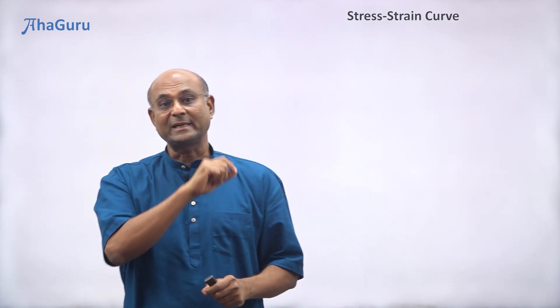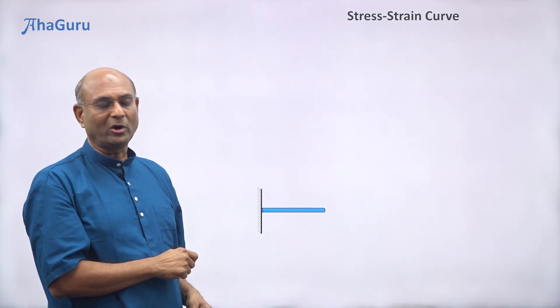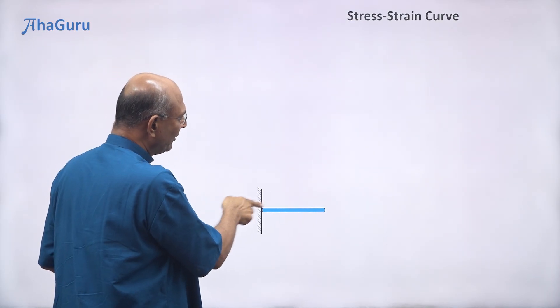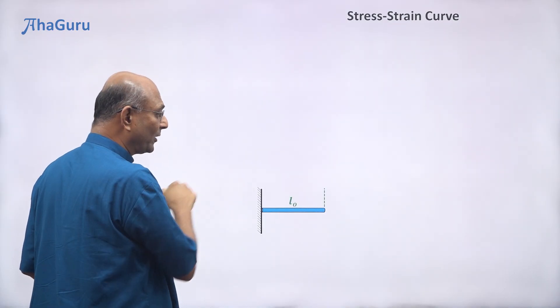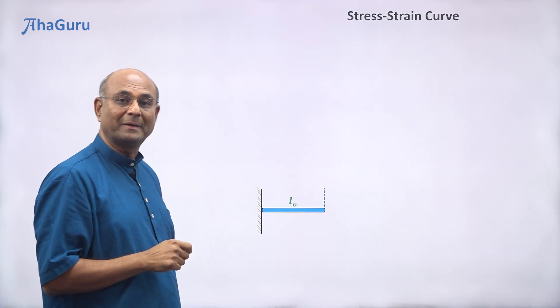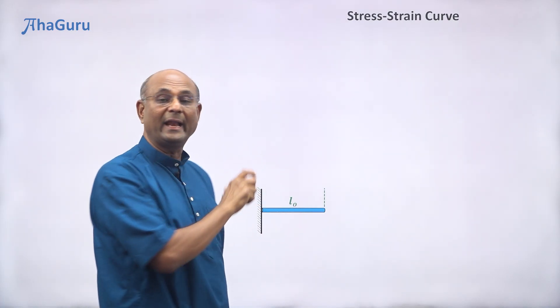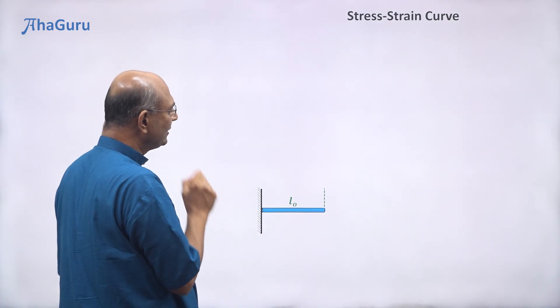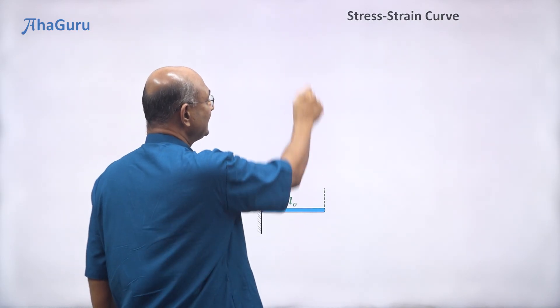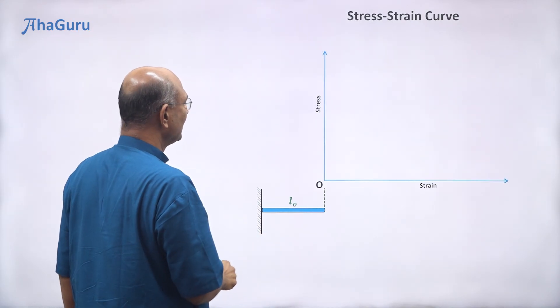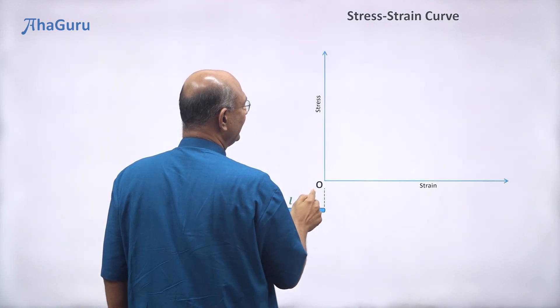Let us try and understand how the stress-strain curves of metallic wires behave by looking at this metal rod. I'm going to pull on this metal rod. Its natural length when I'm not pulling is L-naught. I'm going to draw strain on the x-axis and stress on the y-axis.